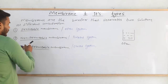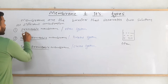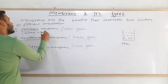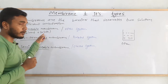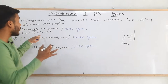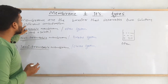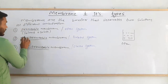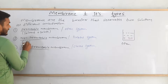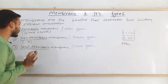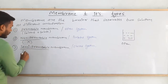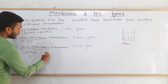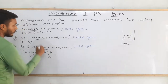In terms of solute and solvent flow: through the permeable membrane, both solvent and solute can pass. Through the non-permeable membrane, nothing can pass — it will just block them. And the semi-permeable membrane will allow solvent to pass through it, but solute will not be able to pass through it.